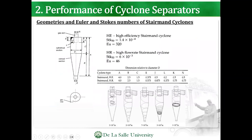These are the typical geometries — do take note, this is important. For the Euler and Stokes numbers for Stairman cyclones: for high efficiency, the typical Stokes number is 1.4 × 10⁻⁴ and the typical Euler number is 320. Whereas for the high flow rate design, the typical Stokes number is 6 × 10⁻³ and the typical Euler number is 46.